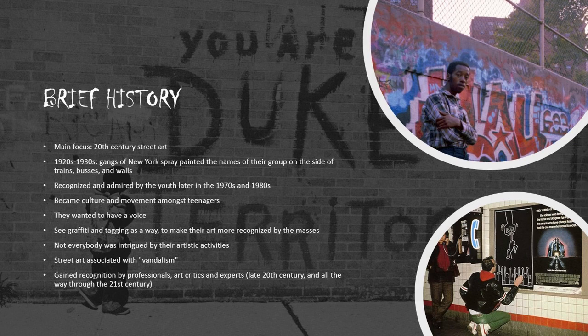It all started between the 1920s and 1930s when the city of New York was filled with many gangs. They used to go around the city and tag the name of their group on the side of trains, buses, and walls. This activity was first admired later between the 1970s and 1980s, especially by the youth. Teenagers of that time started to grab spray cans and other painting materials to make graffiti art on public properties. At the same time, teenagers created a movement and made street art the culture of the youth.